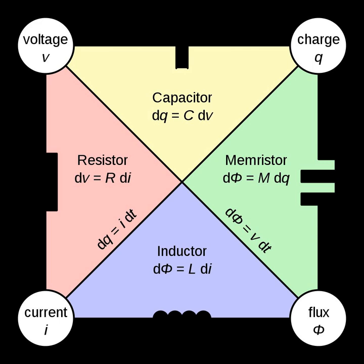For example, an inductor circuit element is assumed to have inductance but no resistance or capacitance, while a real inductor, a coil of wire, has some resistance in addition to its inductance. This may be modeled by an ideal inductance element in series with a resistance.